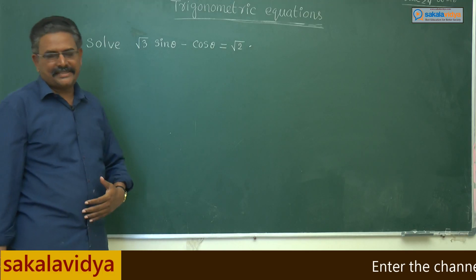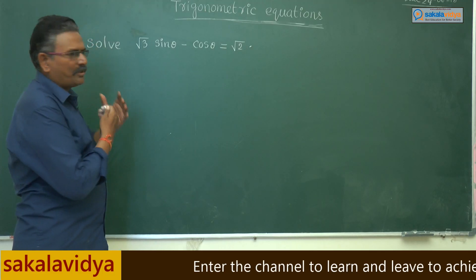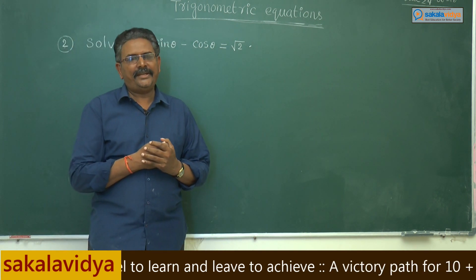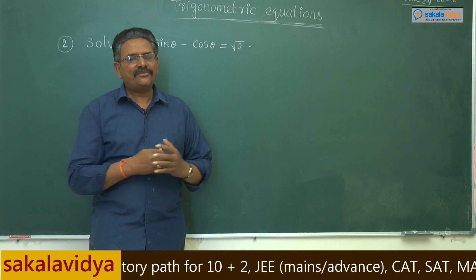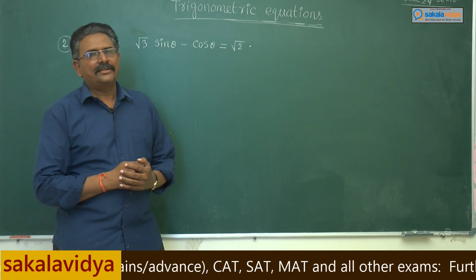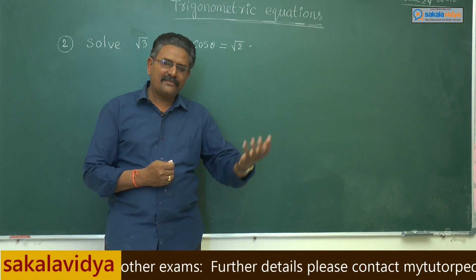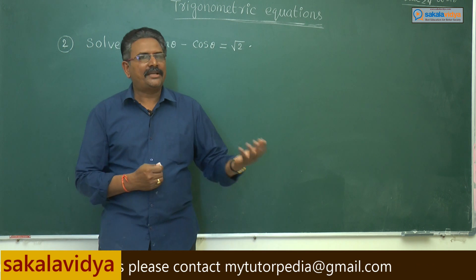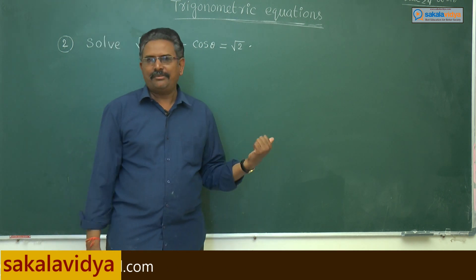Now let us solve the next problem. If you observe, this problem is also in the form of a cos θ + b sin θ = c. That means dividing both sides by root of a² + b², this can be put in the form of sin(α + r) minus b or sin(α + r) - β, so that this problem can be solved. This is the strategy that has to be followed.